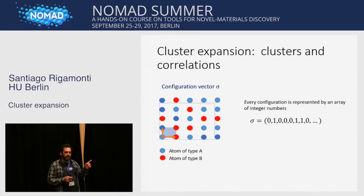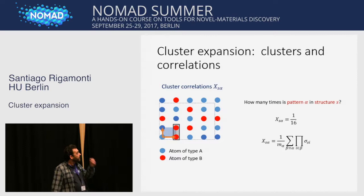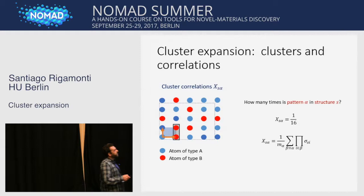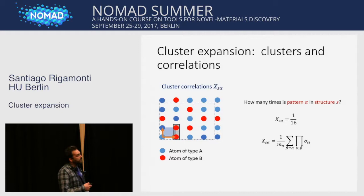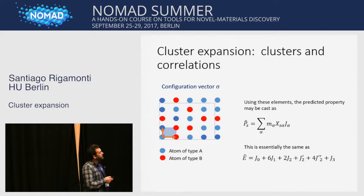Instead of using the representation minus one and one, here I use representation zero and one, which is easier to interpret and is also a valid basis for the cluster expansion. Site one is occupied with atom A, site two is occupied with atom B, then zero, zero, zero, one, one, zero, and so on — this represents our configuration. The cluster correlations in this representation tell us how many times a pattern corresponding to cluster alpha is present in structure S. This is essentially the frequency with which this cluster appears in a given structure. Using these elements, we can write the predicted energy as the product of multiplicities times correlations times the interaction coefficients.